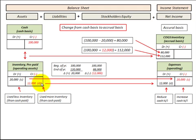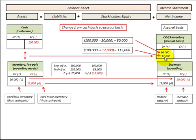Now looking where we had a reduction of twelve thousand dollars in our inventory, that means we had an increase in our expenses of twelve thousand dollars. We add that increase in expense of twelve thousand to the hundred thousand dollars cash paid, so we'd have a hundred and twelve thousand dollars for the cost of goods sold on the accrual basis.